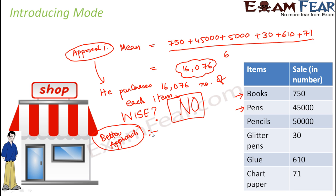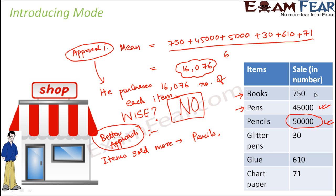The better approach is that he analyzes which items are sold more. He finds that pencils have the highest sale, followed by pens, books, and glue. These are the fast-moving items. The shopkeeper decides not to buy glitter pens or chart paper because their sale is very, very low.